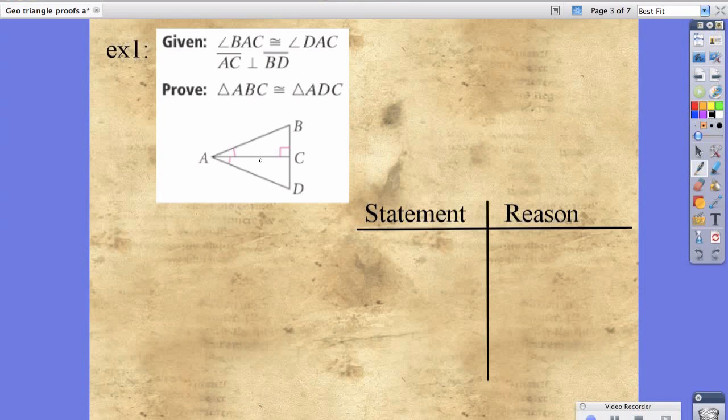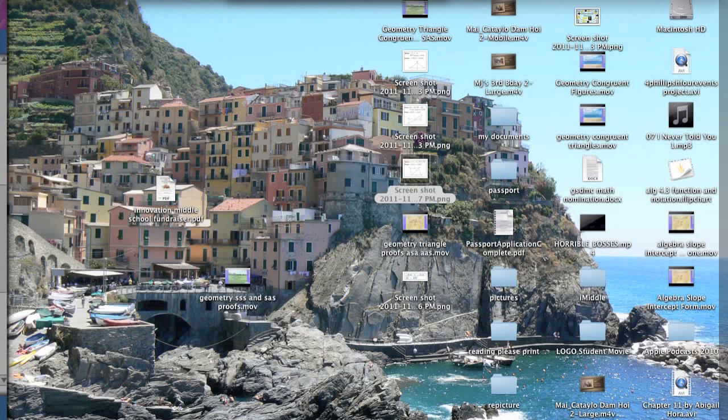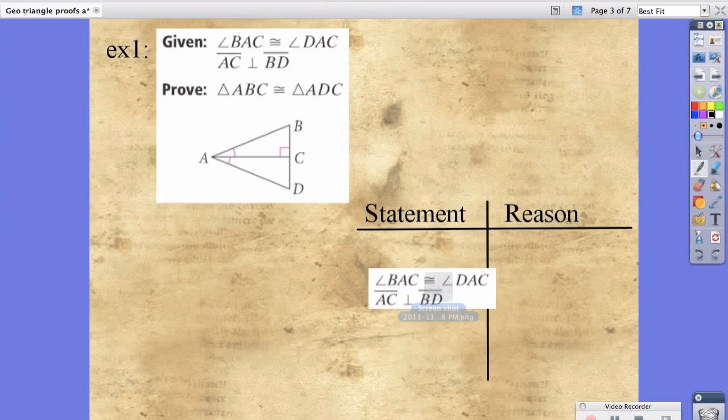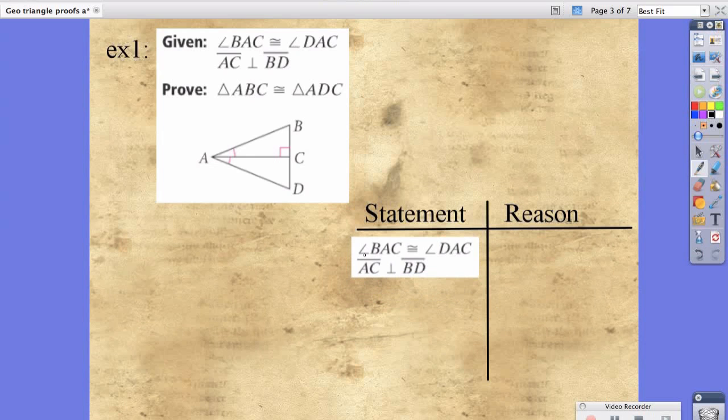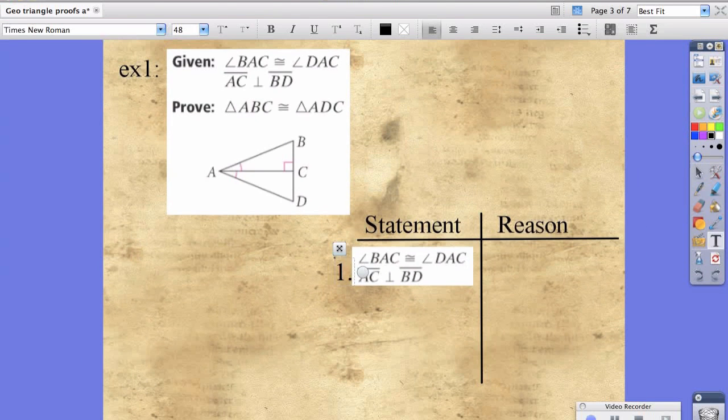Let's try a couple. For example one, given angle BAC congruent to angle DAC, and line segment AC is perpendicular to line segment BD. We're going to go through and solve this. Step one is given, or step one is the easiest, and we know because it's given.